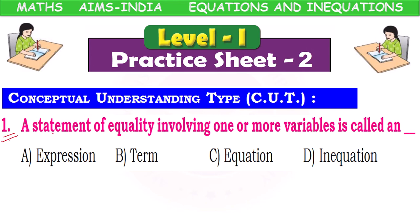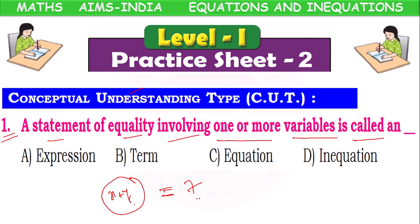First question: a statement of equality involving one or more variables is called a dash. They have given that it is an equality involving one or more variables. Equality means it should contain both LHS and RHS parts. So this will be an example of an equation. Expression is not an equality — it does not have any equality sign. So the correct option is equation.